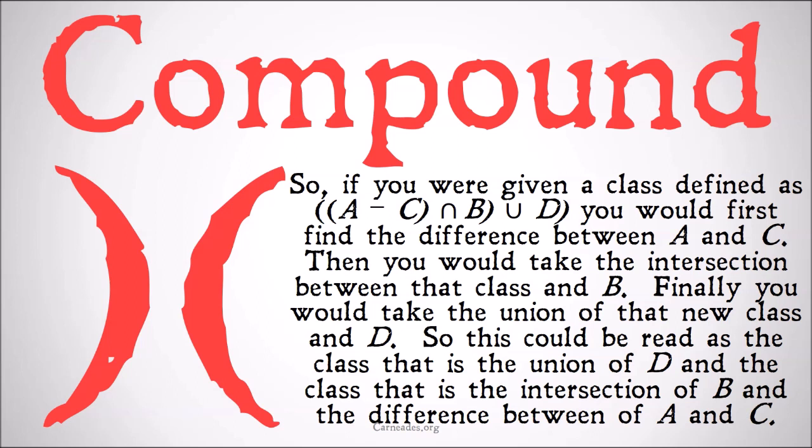So if you were given a class defined as (A minus C) intersection B union D, you would first find the difference between A and C, then take the intersection between that new class and B, and finally take the union of that new class and D. So this could be read as the class that is the union of D and the class that is the intersection of B and the difference between A and C.